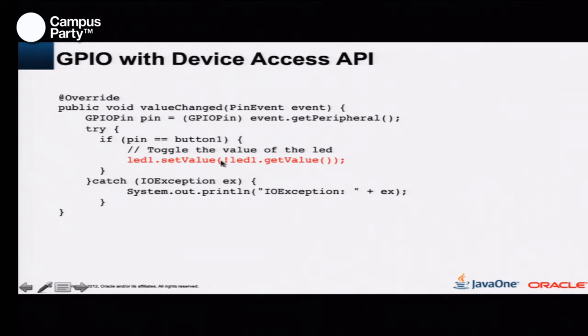Changing the value of the LED is just setting a GPIO pin — you say setValue. So you toggle the value: if it's on, turn it off; if it's off, turn it on. How you read it: getValue. How you change it: setValue. It's that simple.